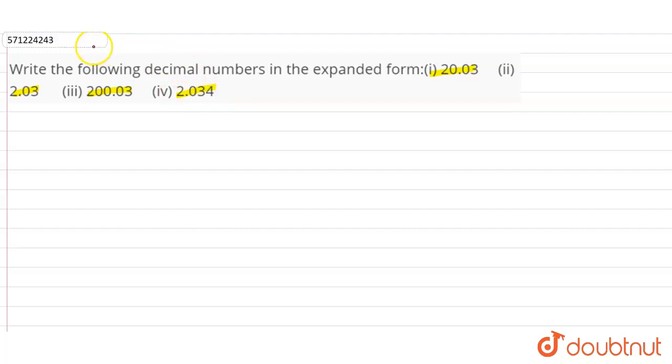In expanded form, we have to multiply the numbers with their place value and add them to get the expanded form.